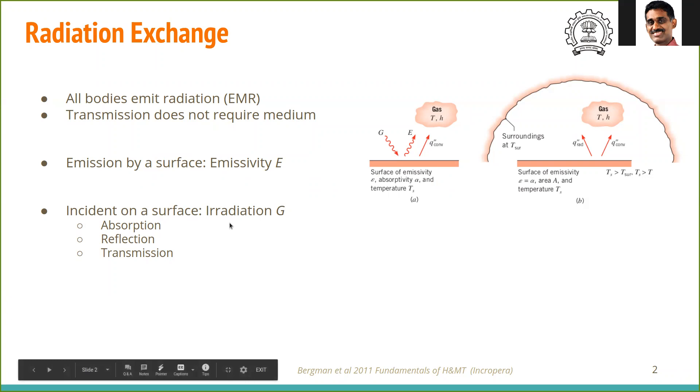The amount of radiation emitted by a surface is denoted by the symbol E, called the emissivity. So the total energy emitted by the surface per unit area is this emissivity. The rate of energy emission is this emissivity.